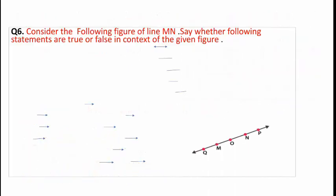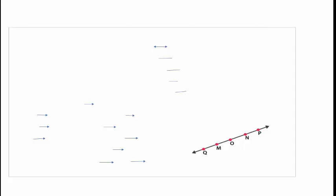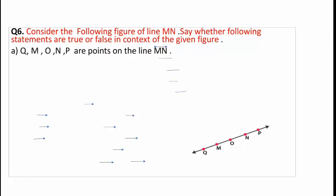One more question for your home assignment is Question 6. Here you have to consider the given figure of line MN and say whether the following statements are true or false in context of the given figure. The first statement is: Q, M, O, N, P, R are points on line MN.